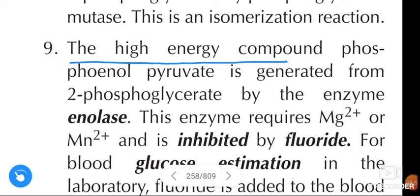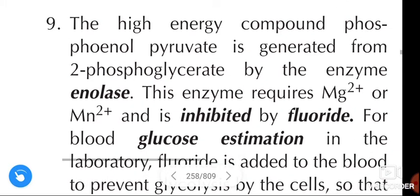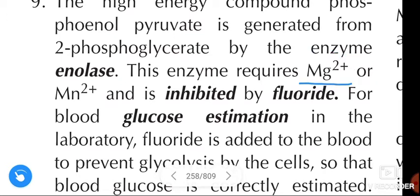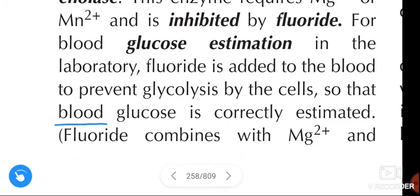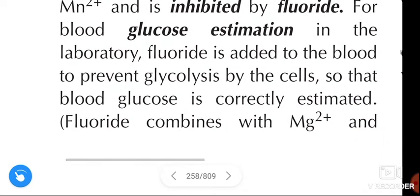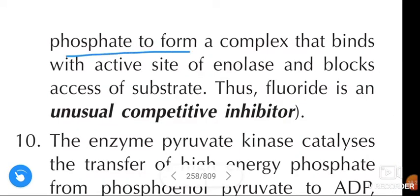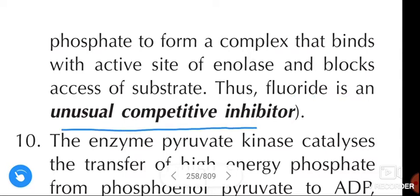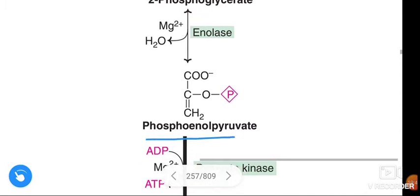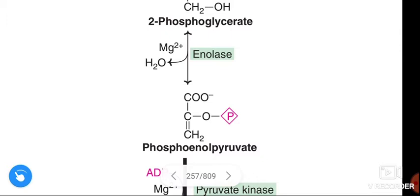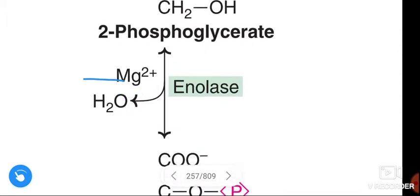The high-energy compound phosphoenolpyruvate is generated from 2-phosphoglycerate by the enzyme enolase. This enzyme requires magnesium ion or manganese ion and is inhibited by fluoride. For blood glucose estimation in the laboratory, fluoride is added to blood to prevent glycolysis by the cells so that blood glucose is correctly estimated. Fluoride combines with magnesium ion and phosphate to form a complex that binds with the active site of enolase and blocks the substrate. Thus, fluoride is an uncompetitive inhibitor.